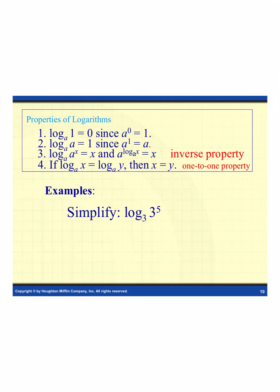For the next one, simplify log base 3 of 3 to the 5th. I notice the base and value are the same, and I have an exponent — that's property 3, the inverse property. Since the base and value match, the whole expression simplifies to whatever the exponent was. So this simplifies to just 5.